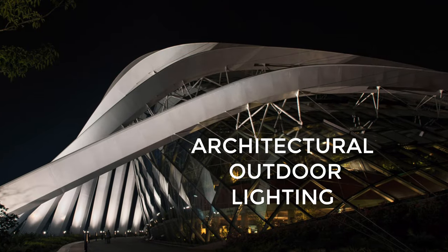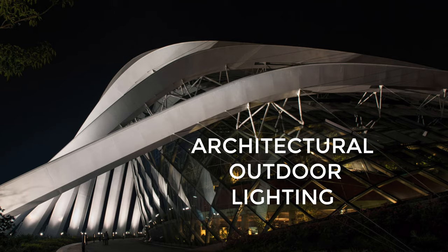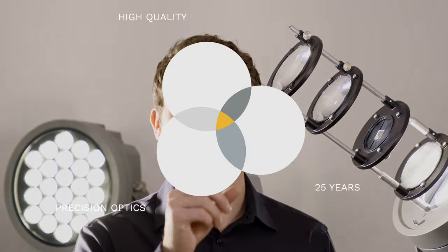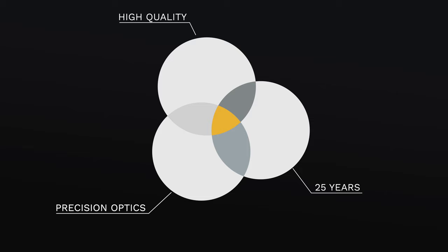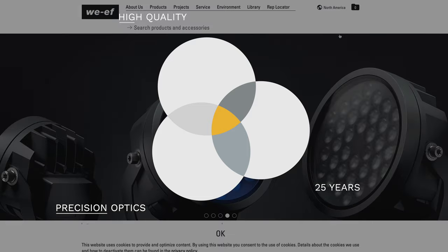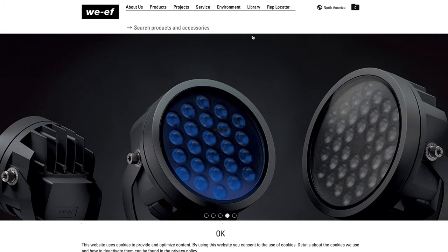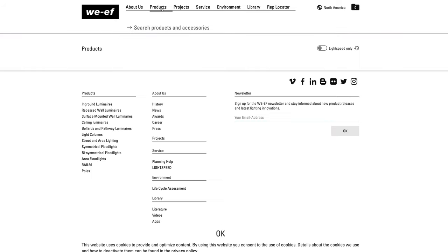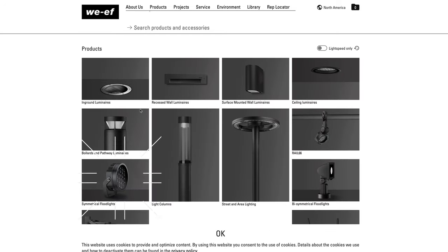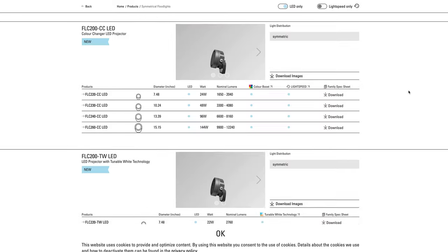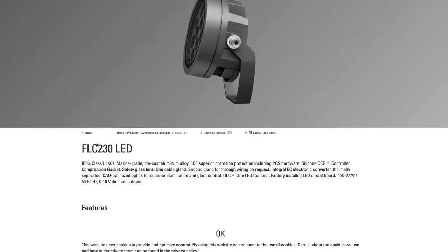This robust floodlight family was built for architectural outdoor lighting. What does that mean exactly? Let's walk through the details and I'll leave it up to you to figure out where this might suit your application best. If you're navigating the WE F website, make sure you're on the North America page. Once you've clicked products, go ahead and head straight to symmetrical floodlights.